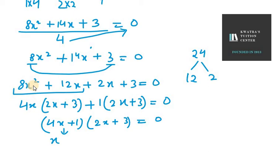Now, from the first term, it will be x equals minus 1 over 4 and for the second term, it will be minus 3 over 2.